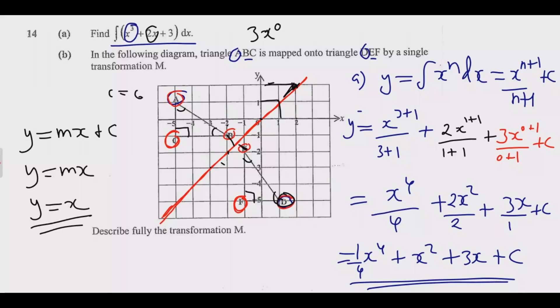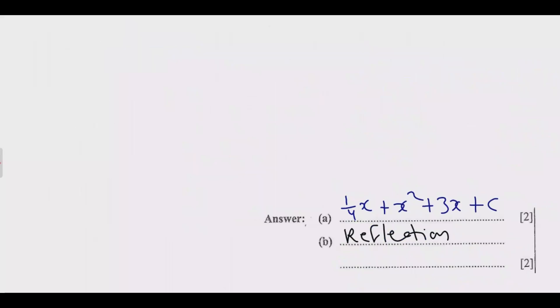So once this is done, we say it is a reflection with the line of reflection, we fill y equals x, line of reflection or the middle line. Once you do that, you're good to go and you get these four marks.